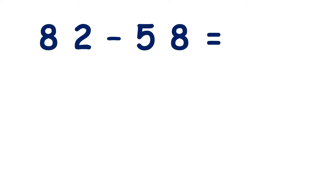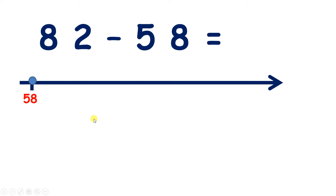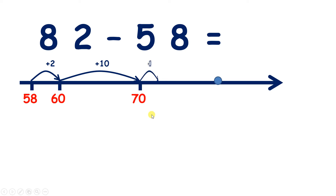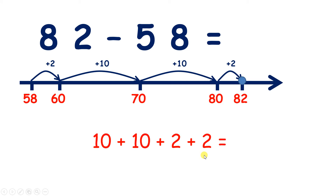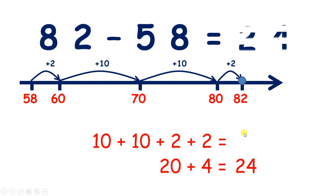Now we have 82 minus 58. Pause the video and see if you can answer this question by finding the difference on a number line. So we start on 58 — 2 more makes 60, so we go to the next multiple of 10. Then we need 2 tens to get to 80, and 2 more makes 82. So we have 10 plus 10 plus 2 plus 2. So we can add 20 and 4, and that gives us 24. So there's our answer.